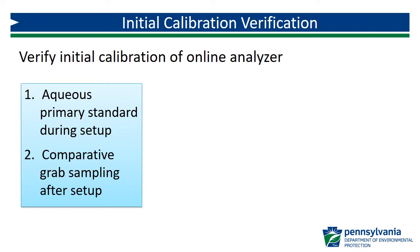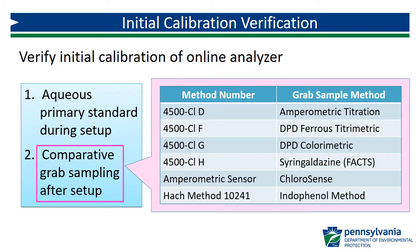Once the analyzer has been properly installed, the next step is to verify the factory programmed calibration curve. This can be completed using one of two methods. An aqueous primary check standard can be prepared at a known concentration, and the analyzer reading of the standard can then be compared to the reference standard concentration. A second option is to perform a comparative grab sample using an EPA-approved grab sample method. Each of the methods in this table is acceptable for comparative grab sampling, as long as the analyst has completed the IDC and the meter is in compliance with initial and routine calibration verification requirements.